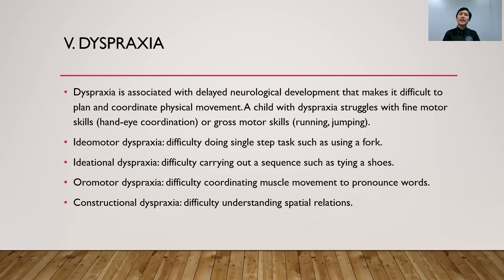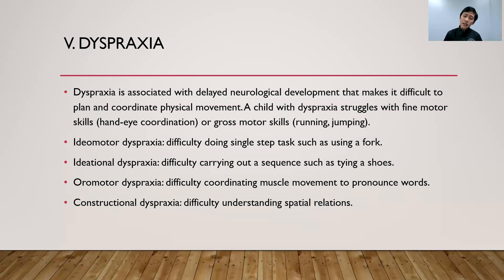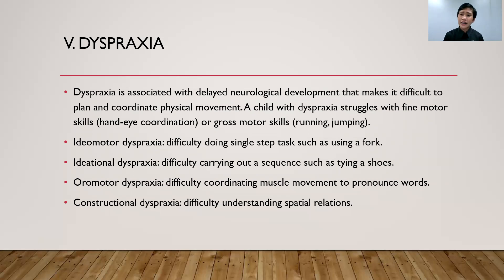And lastly, we have dysgraphia — referring here to motor skills and overall physical or motor coordination, such as hand-eye coordination, running, and jumping. They have difficulty with physical activities. First, ideomotor — difficulty in doing step tasks such as using a fork. They struggle with how to use a fork. And ideational — difficulty in following a sequence such as tying shoes. They do not know how to follow the steps in order, even if given instructions.